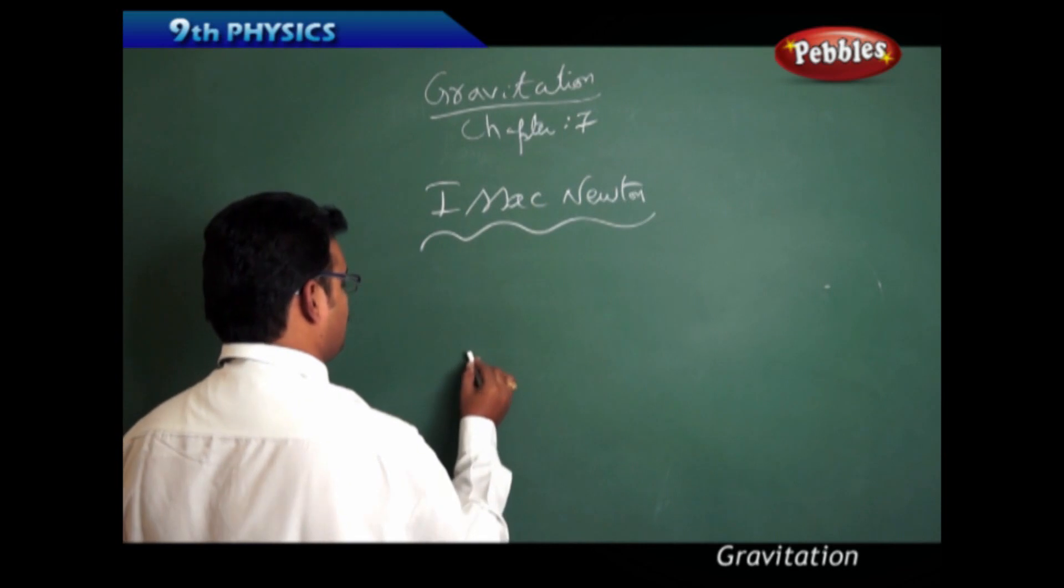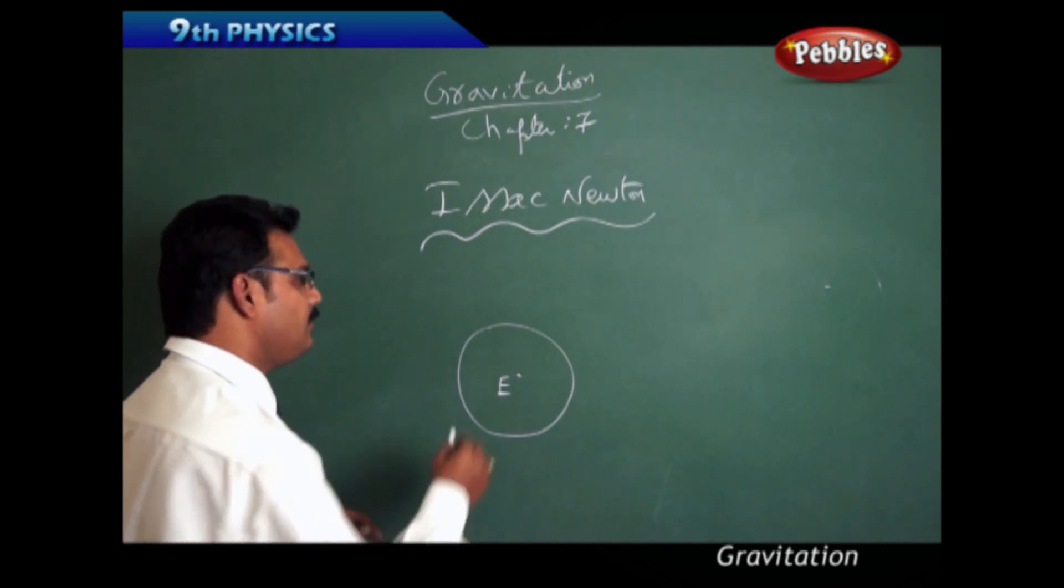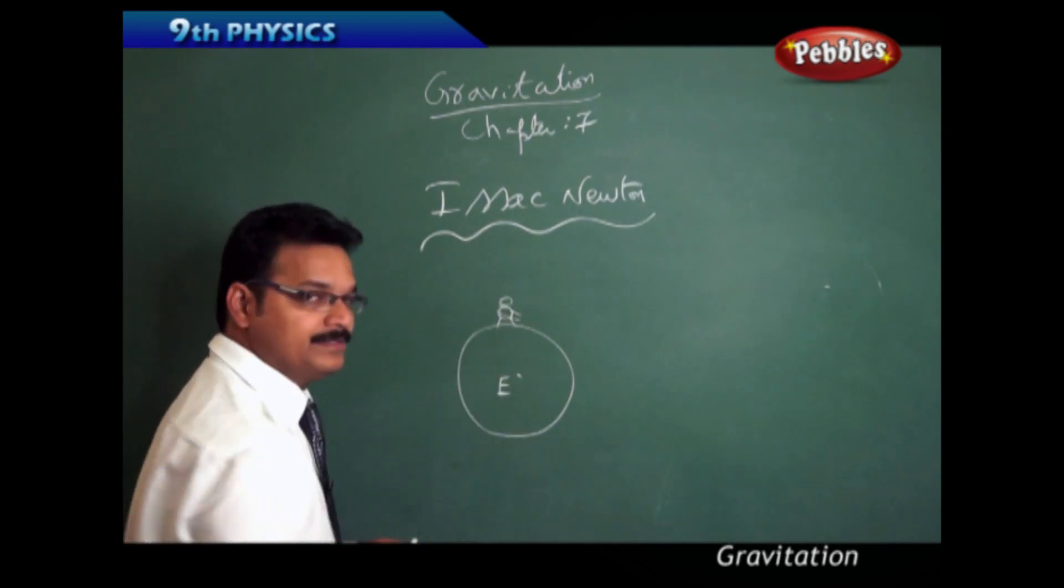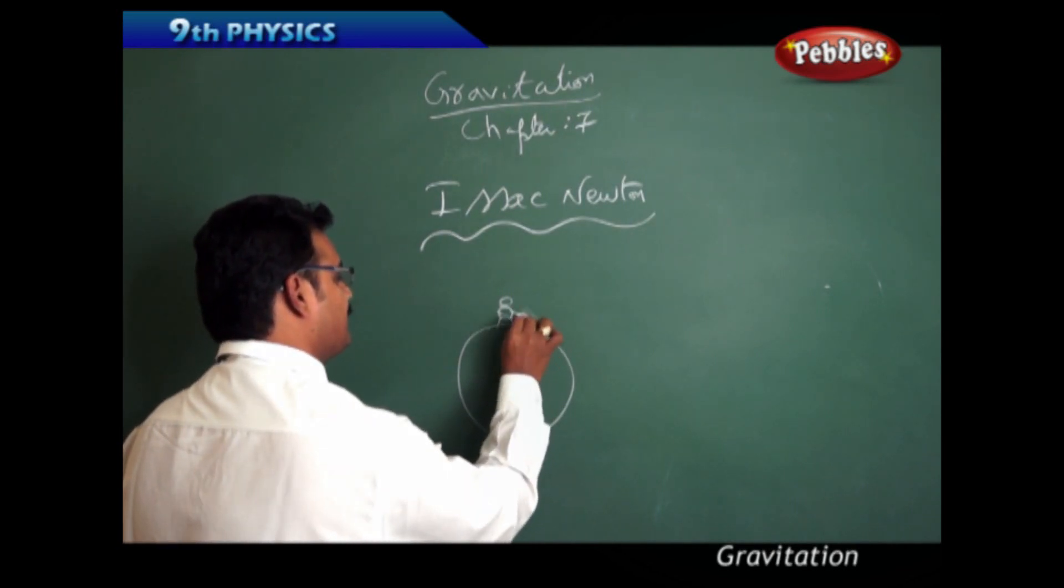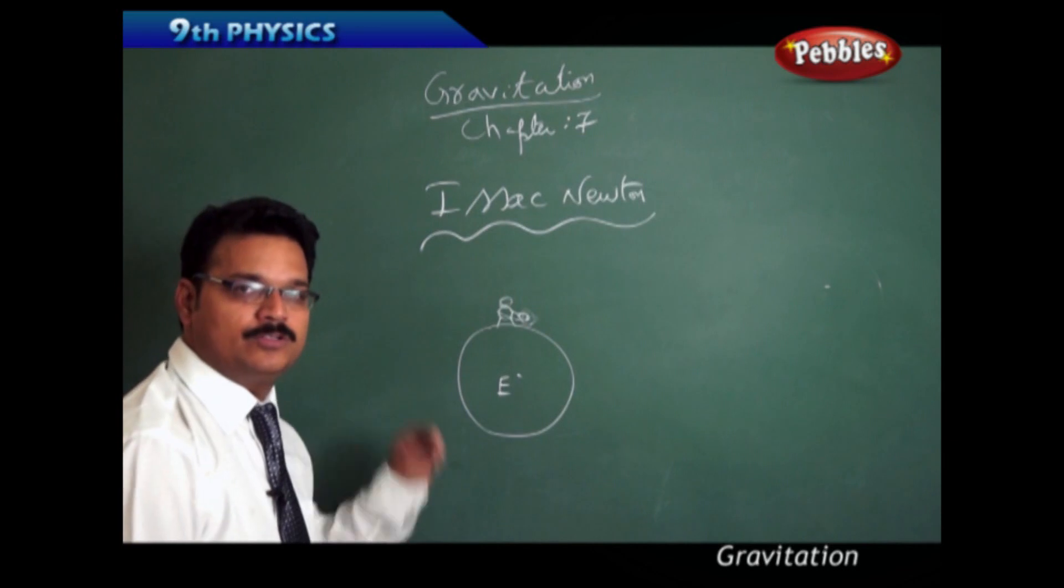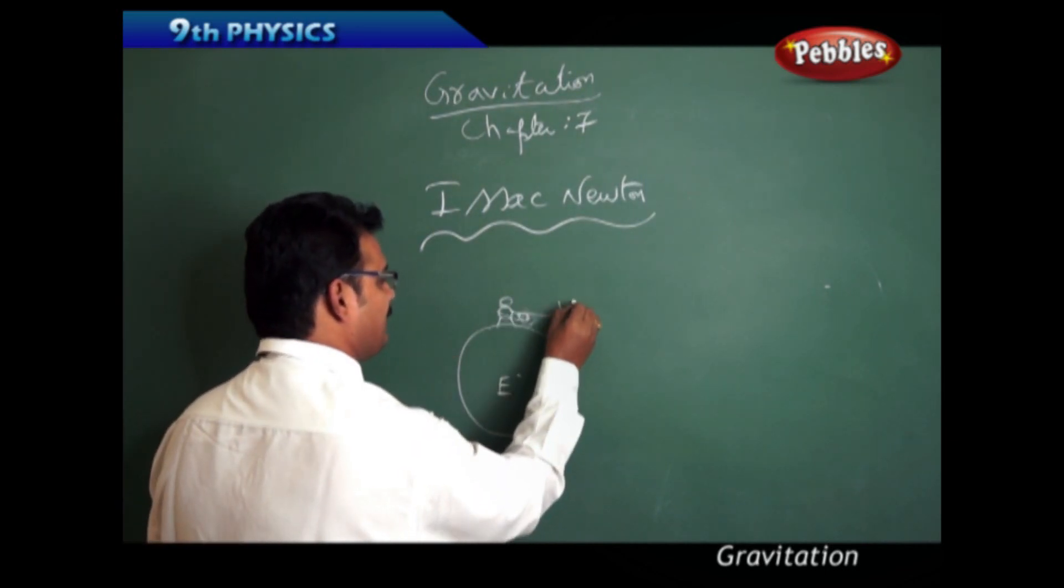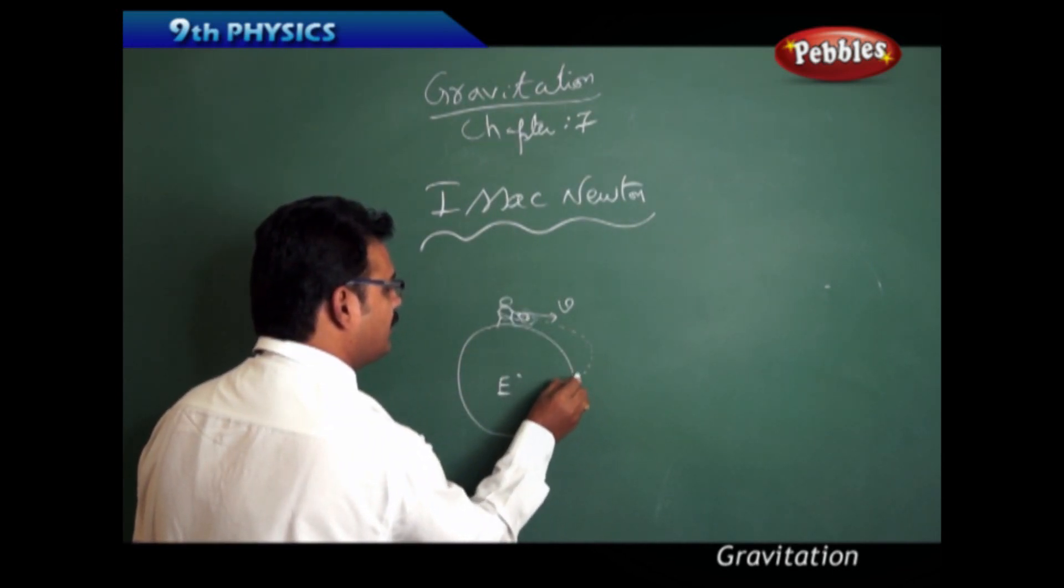Say this is the earth. A person standing on the earth's surface thrown a ball which is in his hand. When he threw the ball with a velocity v, maybe the ball goes to some distance and falls on the earth.